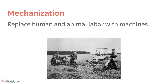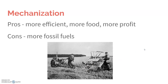Starting with mechanization. Mechanization — we see a decrease of human and animal labor in favor of machines. On the one side, it is more efficient; it does produce more food. Anytime you see more food, you see more profit for the farmer. They can then pay back any loans they had to take out to get those machines. However, with more machines being used, we've seen an increase in fossil fuel use as well, in the tractors and the combines and all that.